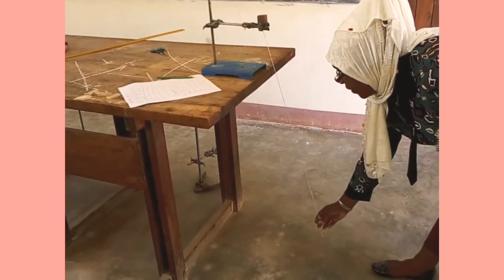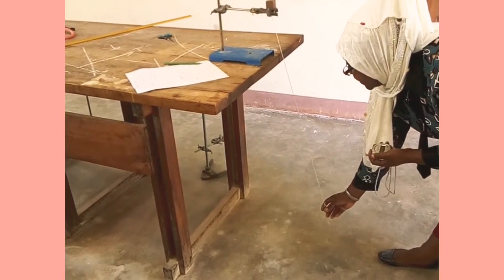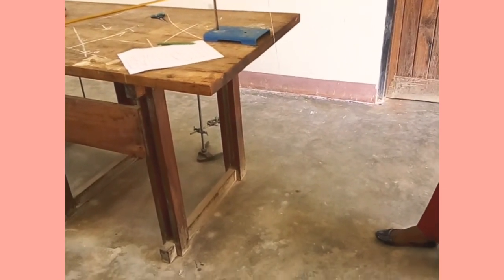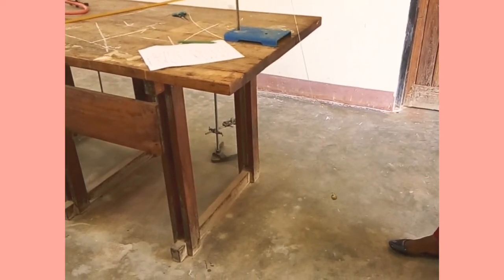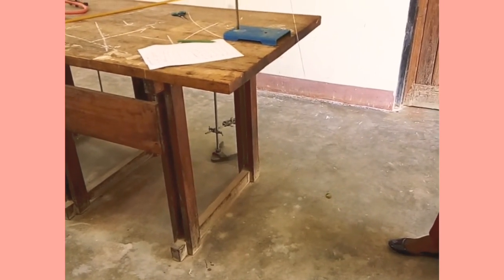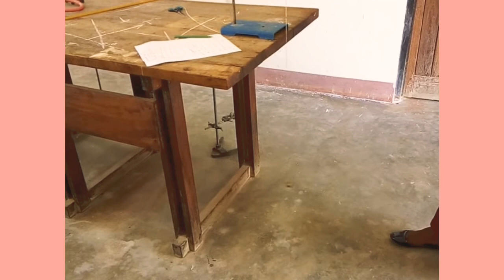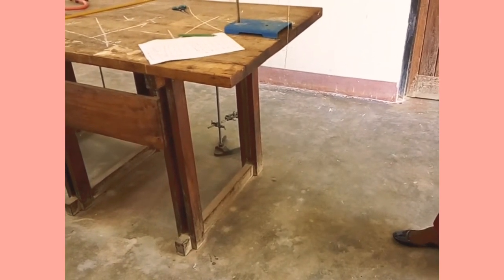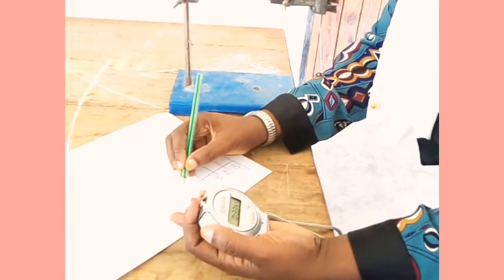Displace the pendulum to a small angle then start counting the number of oscillations. One, two, three, start. One, two, three, four, five, six, seven, eight, nine, ten, eleven, twelve, thirteen, fourteen, fifteen, sixteen, seventeen, eighteen, nineteen, twenty. Here it is 33.97 at this length.